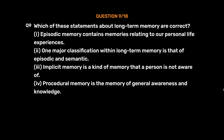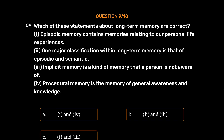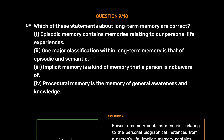Question number 9. Which of these statements about long-term memory are correct? I: Episodic memory contains memories relating to our personal life experiences. II: One major classification within long-term memory is episodic and semantic. III: Implicit memory is a kind of memory that a person is not aware of. IV: Procedural memory is the memory of general awareness and knowledge. Option A: I and 4. Option B: 2 and 3. Option C: I and 3. Option D: 3 and 4. The correct answer is Option C, I and 3. Episodic memory contains memories relating to personal biographical instances, and implicit memory contains memories outside our conscious awareness.